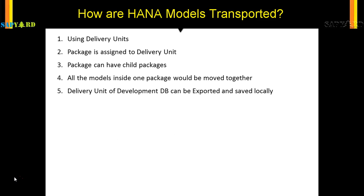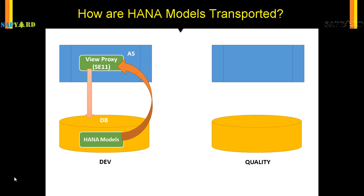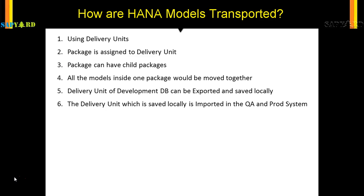The delivery unit of the development database can be exported and saved locally. Once you have saved your HANA models in the delivery unit with the package, you can right-click and save it — like a spreadsheet or Word document — to your local machine. Once that export file is on your local machine, you can log into your quality system and import the same file. Once you import it, it gets activated and your model is ready in the quality system. Once tested, it can be sent to the production system.